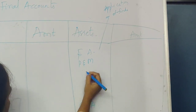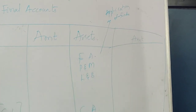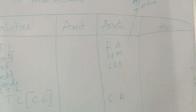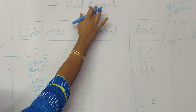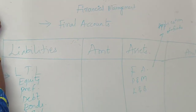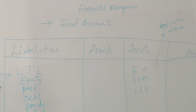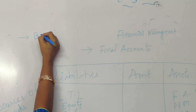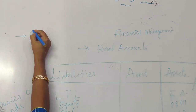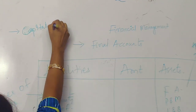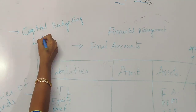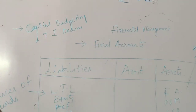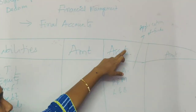The funds which we have sourced we are going to apply on fixed assets like plant and machinery, land and buildings, furniture, and structures. In financial management, the topics are divided into various aspects. Whatever the application of funds is, we are going to learn it as capital budgeting, which covers long-term investment decisions.